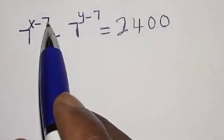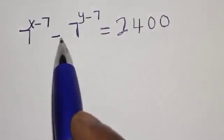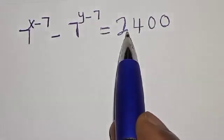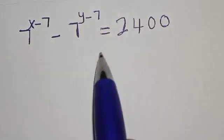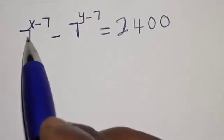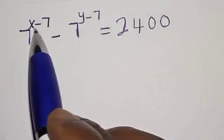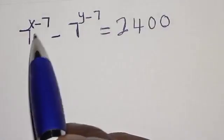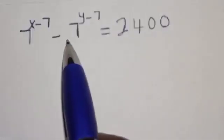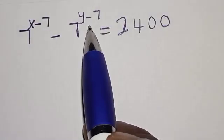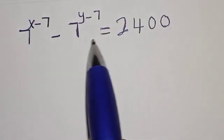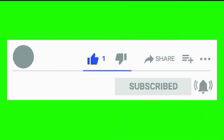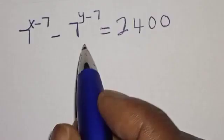7 raised to power x minus 7, minus 7 raised to power y minus 7, is equal to 2400. Hi everyone, welcome to my class. In this class we want to find the value of x and y from this given equation. Before we proceed, please don't forget to like, share, comment and subscribe.